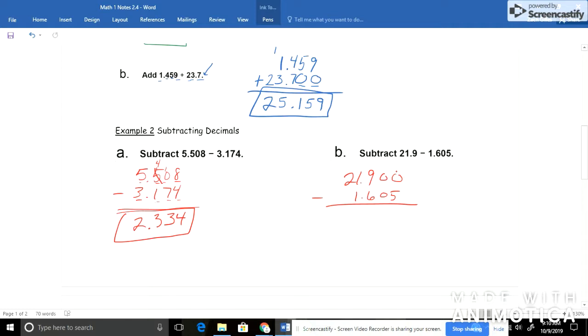Now I need to subtract. It could be a little bit more confusing now. So 0 minus 5 I can't do. I would need to borrow from this digit. And this digit doesn't have any to give. So I actually need to borrow again. So I'd have to borrow a couple times. Making this 8. Making this 9. And making this 10. So 10 minus 5 now is 5. 9 minus 0 is 9. 8 minus 6 is 2. Bring my decimals straight down. And 21 minus 1 would be 20. For a total of 20.295.